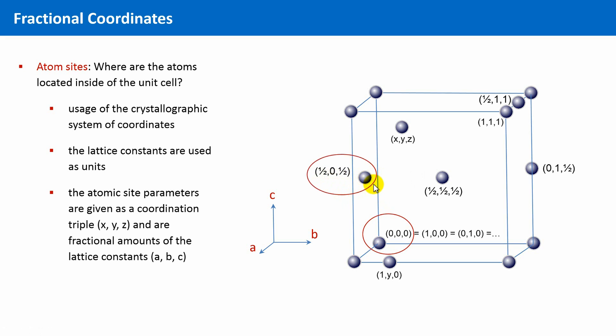If we have only 1 times 1 half and the other values are 1 or 0, then the atom sits at the middle of an edge. And vice versa, if the coordination triple has no special values, such as 0, 1, half and so on, then the atom is on a so-called general position inside the unit cell.